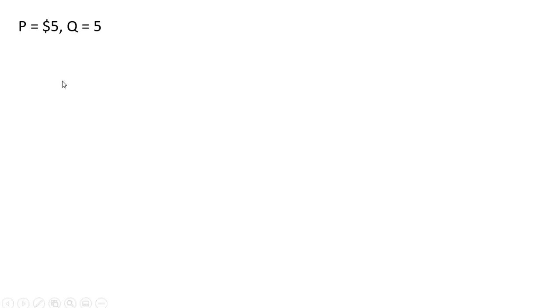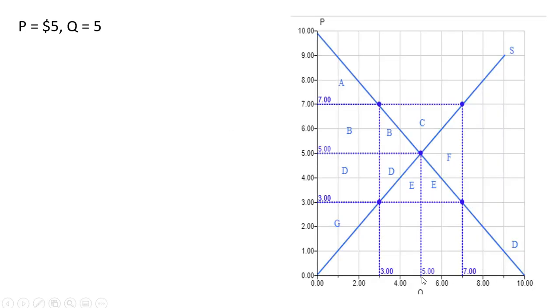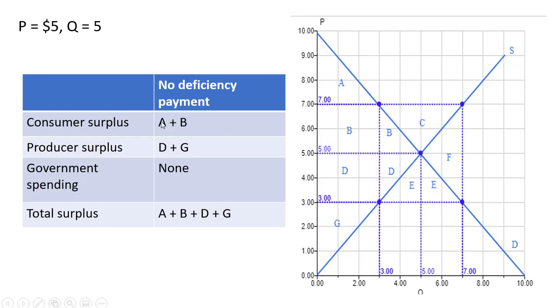So let's look at the welfare effects. We're going to start with no deficiency payment. So the equilibrium price is 5. The equilibrium quantity is 5. Consumer surplus is the difference between the height of the demand curve and the price that consumers pay up to that last unit or the fifth unit. So area A and B is consumer surplus. Producer surplus with no deficiency payment is going to be the area represented by the letters D and G, the difference between the price that sellers or producers are receiving and the supply curve up to that last unit. The government is not involved in the market right now, so there's no government spending. And total surplus is just A plus B plus D plus G.